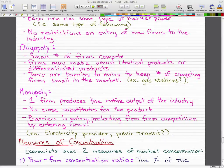So a monopoly. This is a market structure in which only one firm produces the entire output of the industry and there are no close substitutes for the product. But there are barriers to entry, which may be set up by government, and this protects the firm from competition by entering firms. So an example of this would be your electricity provider or public transit. Those are monopolies.